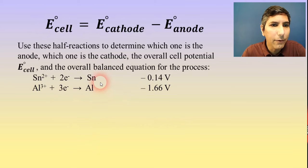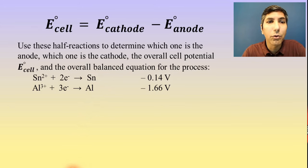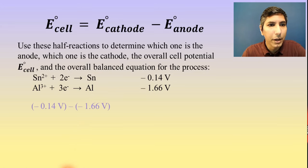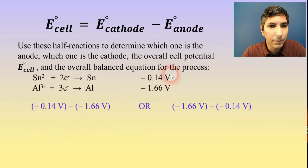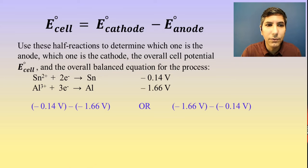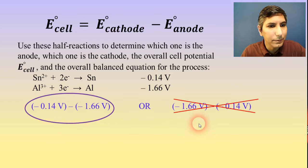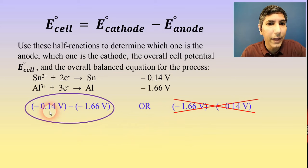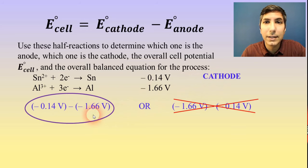Let's try another example. We're going to use these two half-reactions to determine which one is the anode, which one is the cathode, the overall cell potential E-cell, and the overall balanced equation for the process. We're going to plug into this subtraction both ways and see which one gets us the positive number. It looks like this one will work and that one will not. So whichever value is in the first position — that's the cathode. The negative 0.14, the tin, is the cathode. The one in the second position is the anode — that would be aluminum.